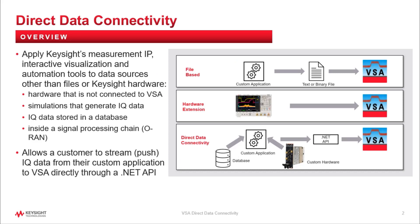Up until now, there have been two methods to get IQ data into VSA for further analysis. The primary and most common is by connecting to hardware — there are over 200 Keysight models supported, so a customer can find the right hardware for their application. Secondly, VSA supports over half a dozen file formats that can be used to save and recall IQ data recordings.